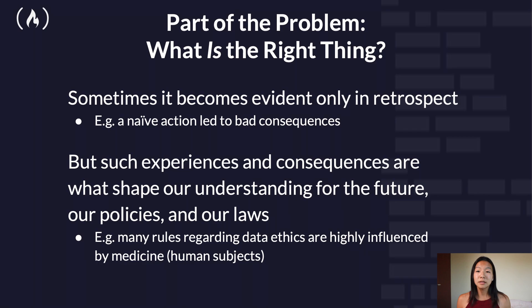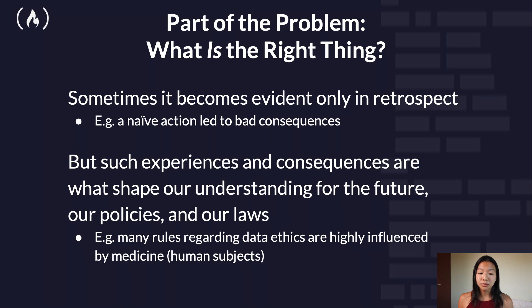But ethics also go beyond laws. If you told me a secret and I agreed not to tell it, but did, that's not a crime — but it might damage my friendship with you and my reputation with others. Again, non-legal consequences might be a factor. Part of the problem is: what is the right thing? Sometimes it only becomes evident in retrospect, such as a naive action that led to bad consequences. But such experiences and consequences are exactly what shape our understanding of the future, our policies, and our laws. Many rules regarding data ethics are highly influenced by medicine and human subjects. When ethics aren't laws, laws often follow ethics because ethics are our shared social values.